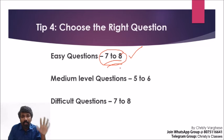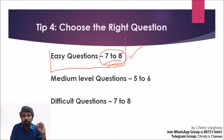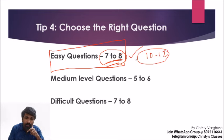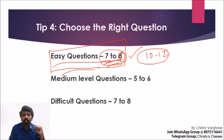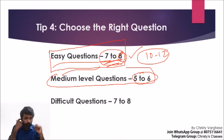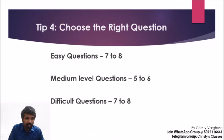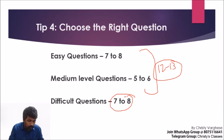Your first target should be to find those easy questions — ones that can be done in 1 to 1.5 minutes. Those 7-8 questions will not even take 10-12 minutes, giving you about 16 marks quickly. After the easy questions, go for medium-level questions. Analyzing previous papers shows 5-6 medium-level questions per paper — with good practice, these can be done comfortably within 2 minutes.